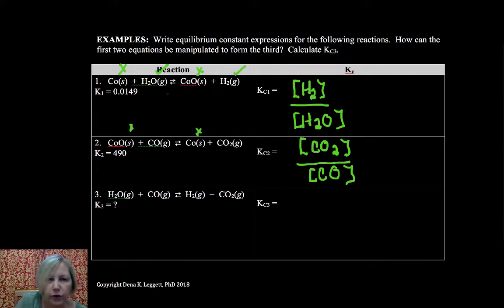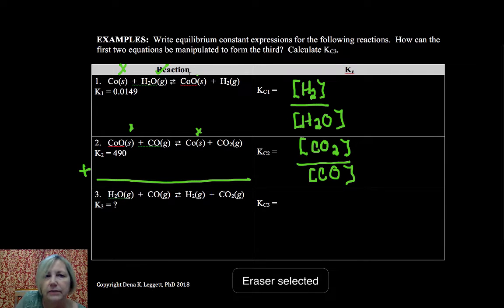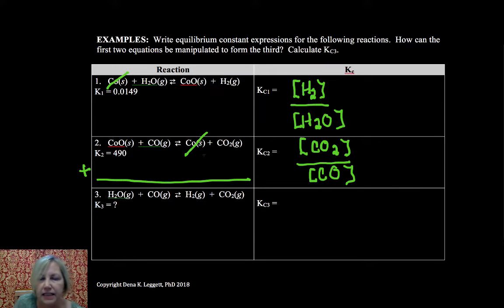Now if we add those two together, I want you to notice we're going to take and add these two reactions together. My students have seen this before when we did mechanisms. You're going to treat that double arrow as an equal sign, and if things show up on both sides they're going to cancel. So that was a reactant and a product so it will cancel. That's a product and a reactant so it will cancel. And now we're going to bring everything down that doesn't cancel and we get our final reaction.